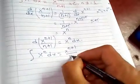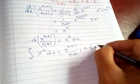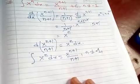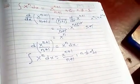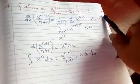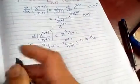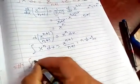It will be x to the n plus one over n plus one plus C, and remember that this n is not equal to negative one. When n is not equal to negative one, then this formula works.